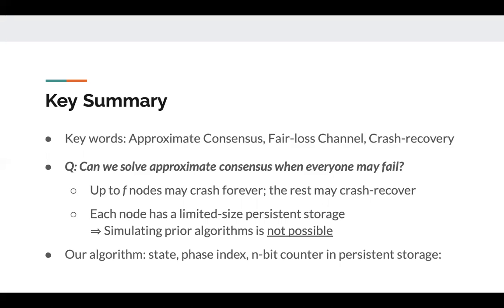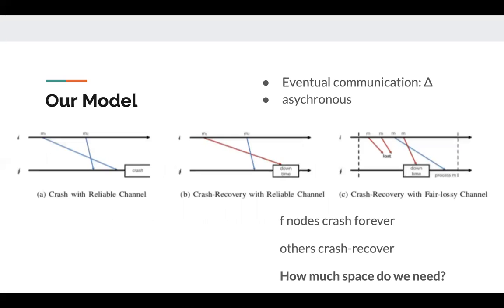Usually, the traditional model has a reliable channel, which is shown in graph A. So, assume I send a message, it will always be delivered if the destination is correct. But for crash recovery with a reliable channel, as shown in graph B, the message will always be delivered, but it will still be lost during downtime. And by contrast, in our model in graph C, there is no guarantee that the message will be received, and the data can be lost during downtime as well.